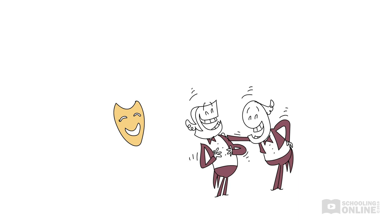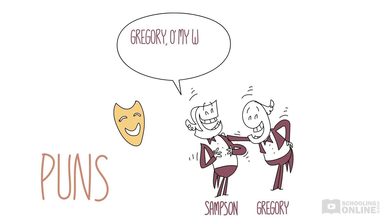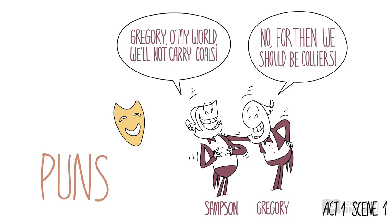Let's look at the comedic aspects first. Shakespeare had written a few successful comedies before Romeo and Juliet, and we can see this light-hearted tone in Romeo and Juliet as well. There are plenty of jokes — be on the lookout for all the fun wordplay, like in the opening scene, where two Capulets make puns about their jobs and the conflict with the Montagues, throwing in plenty of sexual innuendo for good measure.